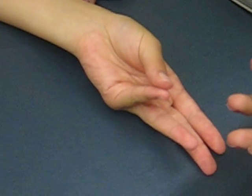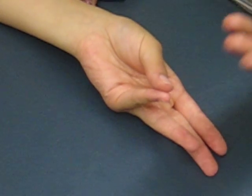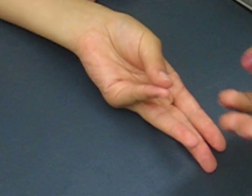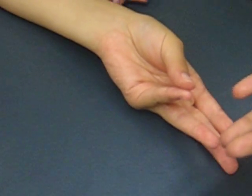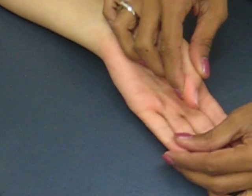There's no normal range of motion, so there's no goniometer involved. But in a case where a patient cannot bring their thumb all the way to their pinky, like say for instance it stops here,